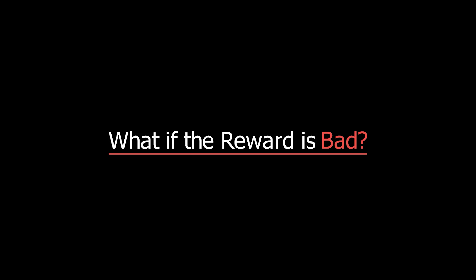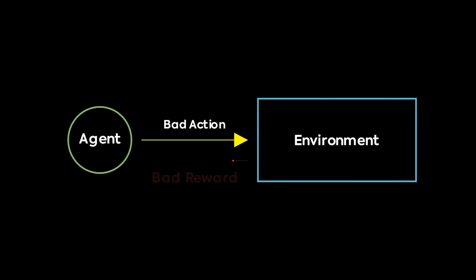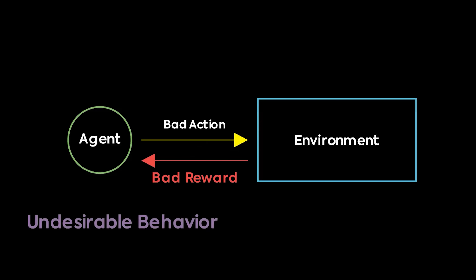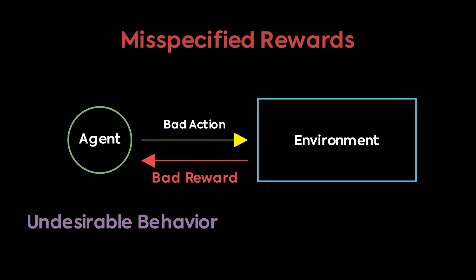So what if the reward is wrong? In this situation, we might choose the wrong reward, or we think we're choosing the right one but it isn't actually exactly what we want. In this case, the agent will literally learn undesirable behavior — behavior that is not in line with what we want it to do. This is called misspecified rewards. The agent doesn't know any better; it is just trying to optimize for whatever reward we set up for it.